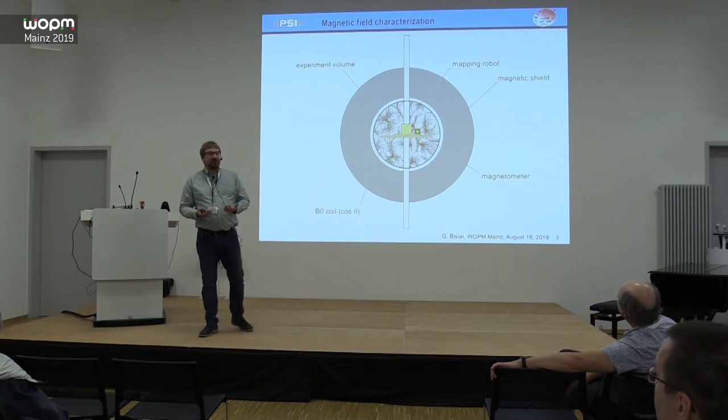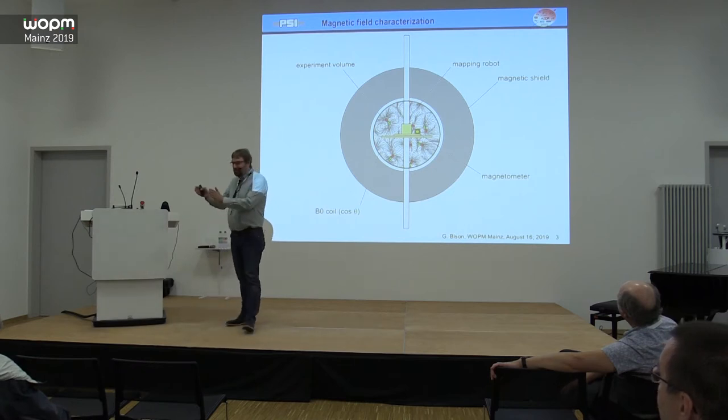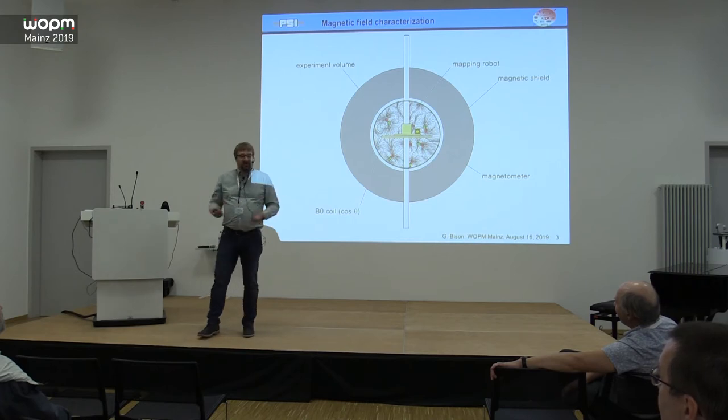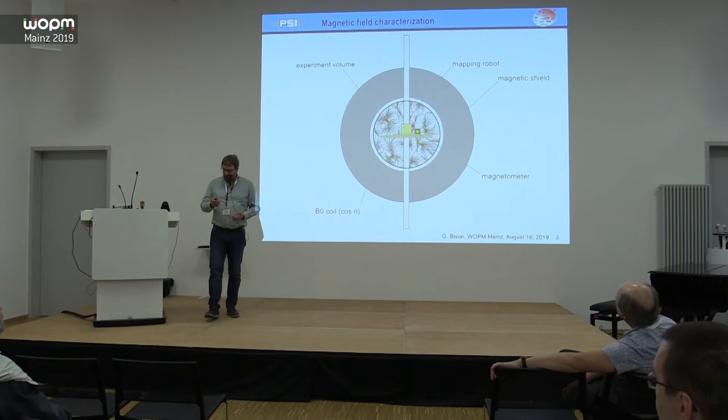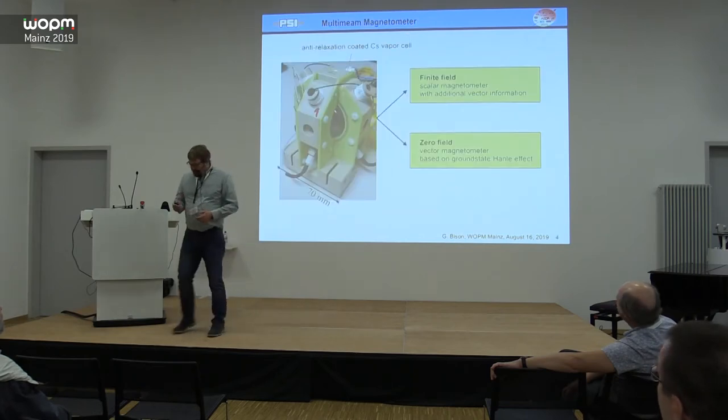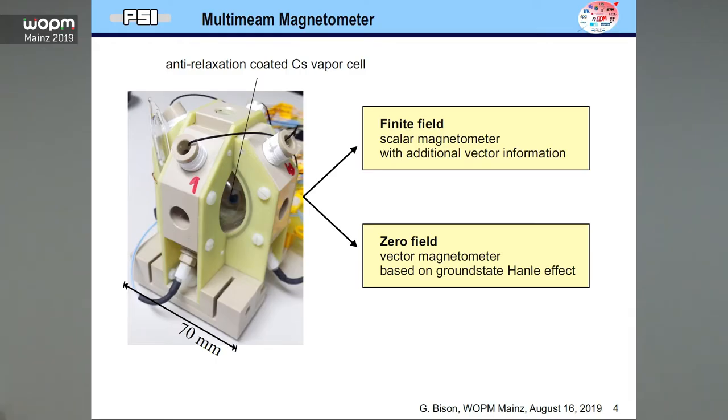It's great to have a magnetometer that can operate with the field on and then you can switch the field off and see, okay, what remains? Is this the same picture? Is it related to the coil or the shield or something else? So this is how it looks. Not very beautiful I think, but it works.